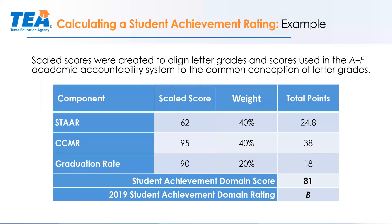For an elementary or middle school, 100% of your student achievement rating comes from STAAR. In my example, a scaled score of 62 falls in the 60 to 69 range, which is a D. If you have all three components — STAAR, CCMR, and graduation rate — you weight them, add together, and round, giving an 81 or a B in my example. That's how you receive a rating in the student achievement domain.